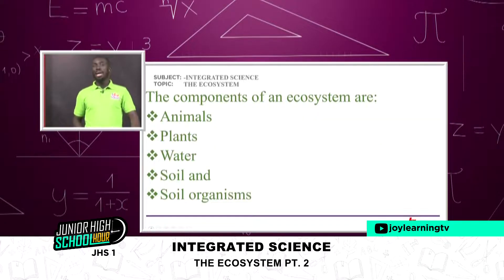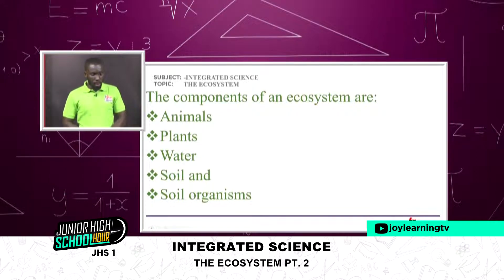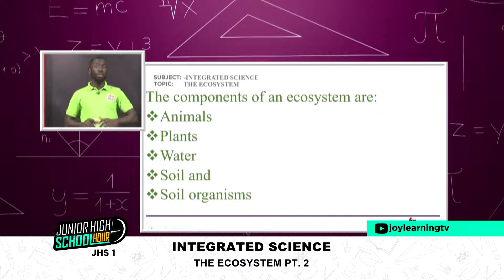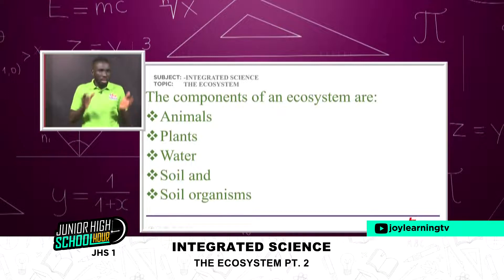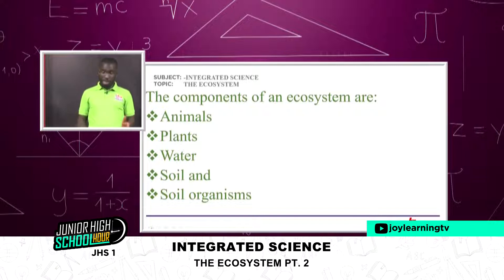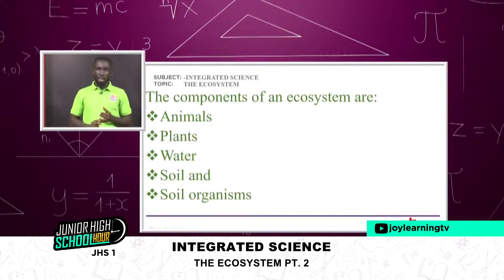Number two: what are the components of an ecosystem? What do we need to form an ecosystem? We know the ecosystem is a stable unit that helps plants and animals interact, so we know there are plants and animals present. Aside these, we also have water, soil, and then soil organisms.